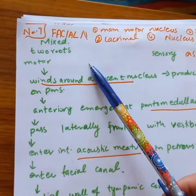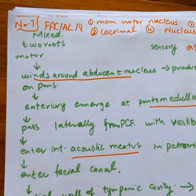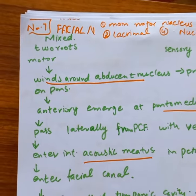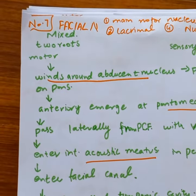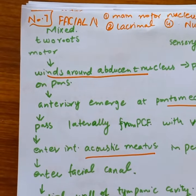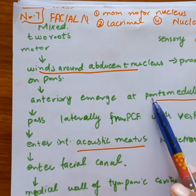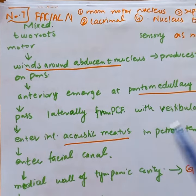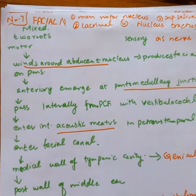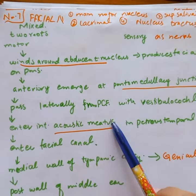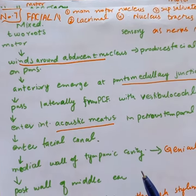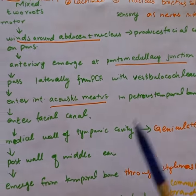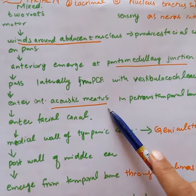For the motor root, we have the abducens nucleus, which forms the facial colliculus. The nerve emerges from the pontomedulary junction, passes through the posterior cranial fossa, and travels alongside the vestibulocochlear nerve.